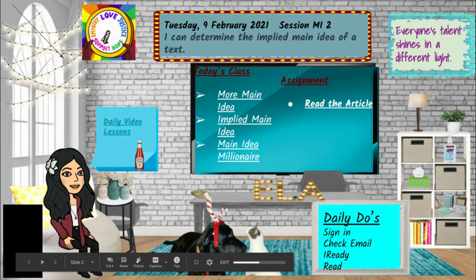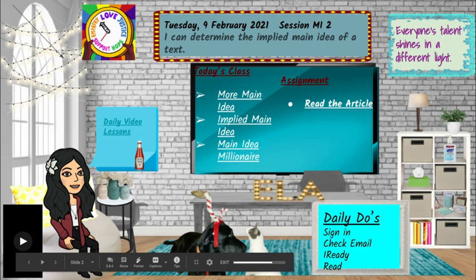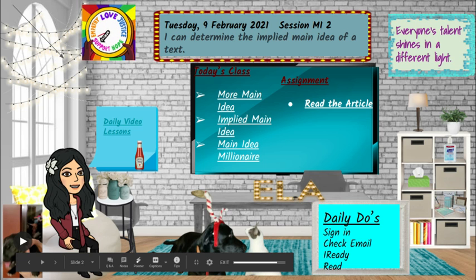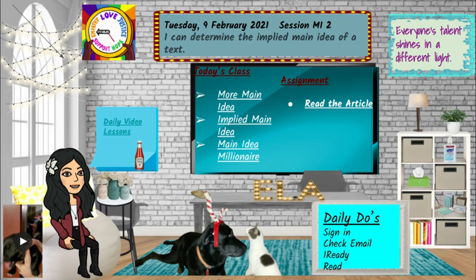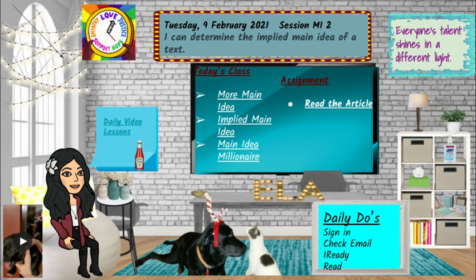Good morning, everyone. Today is Tuesday, the 9th of February, 2021, and we are continuing our discussion of main idea. Today we're in session MI2, and your I can statement is: I can determine the implied main idea of a text.